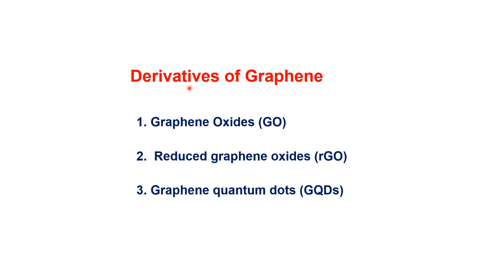There are three major derivatives of graphene: graphene oxide, reduced graphene oxide, and graphene quantum dots.